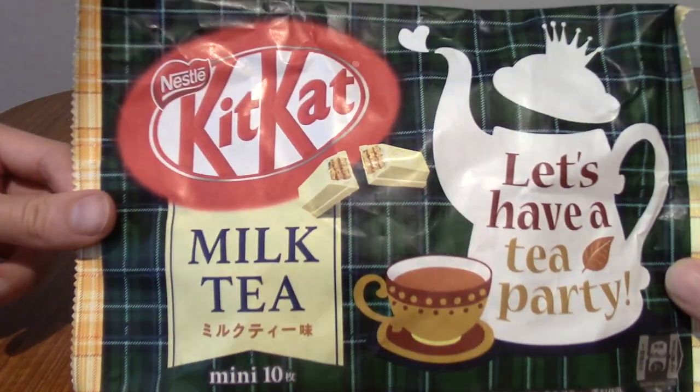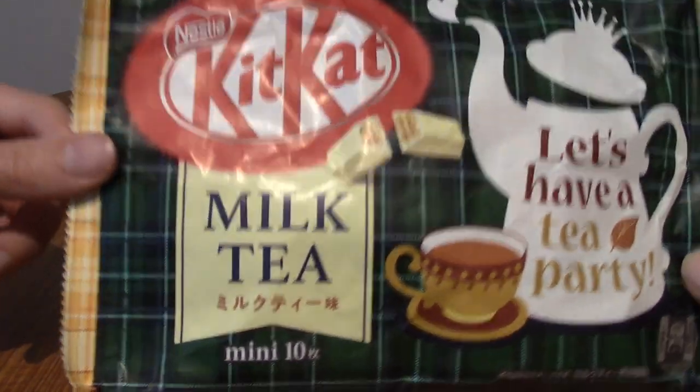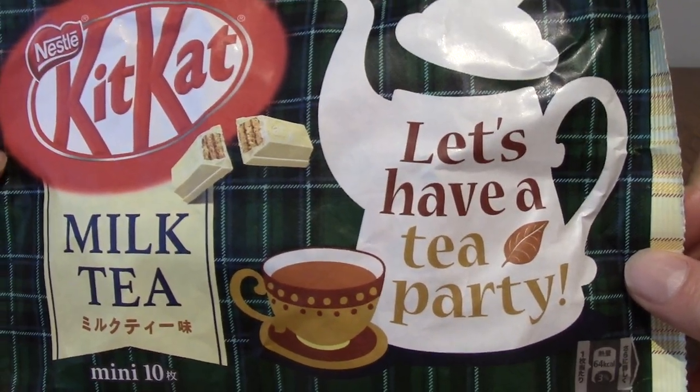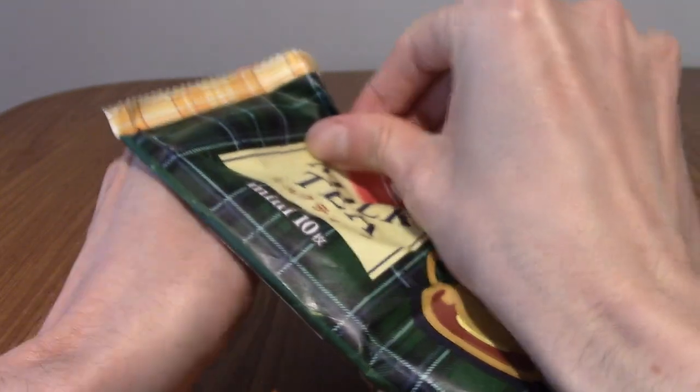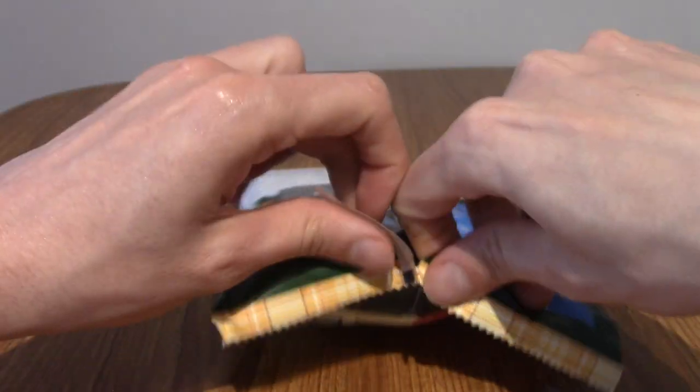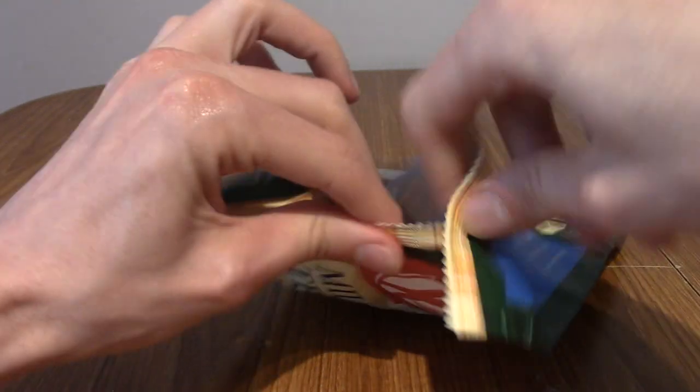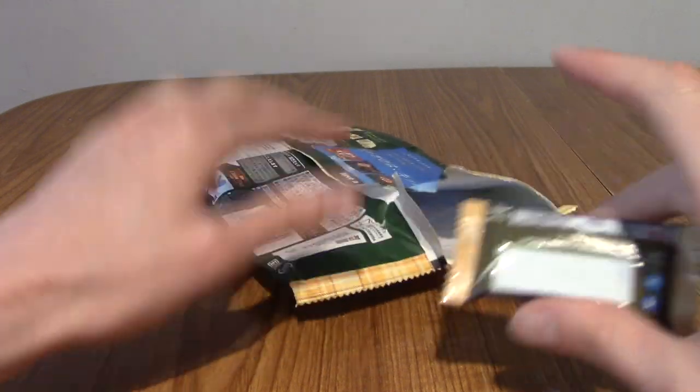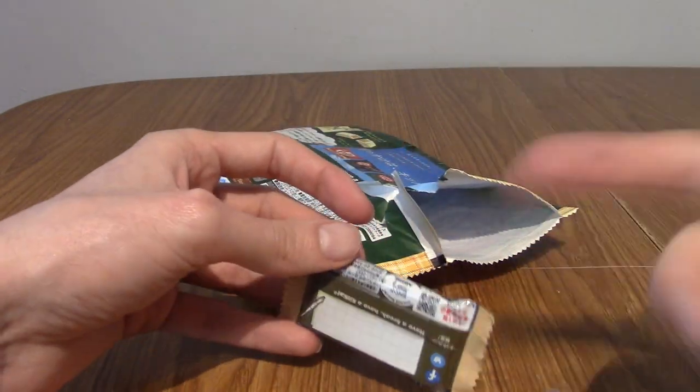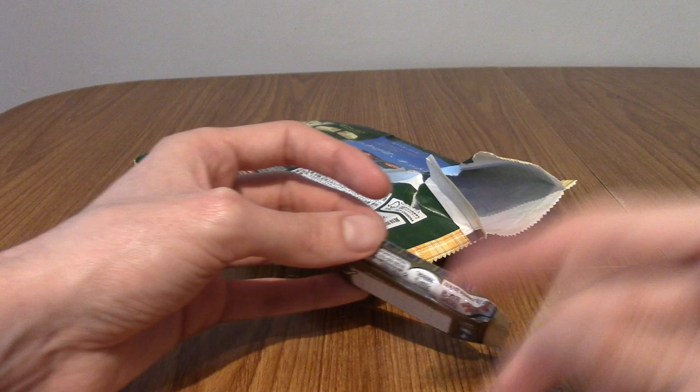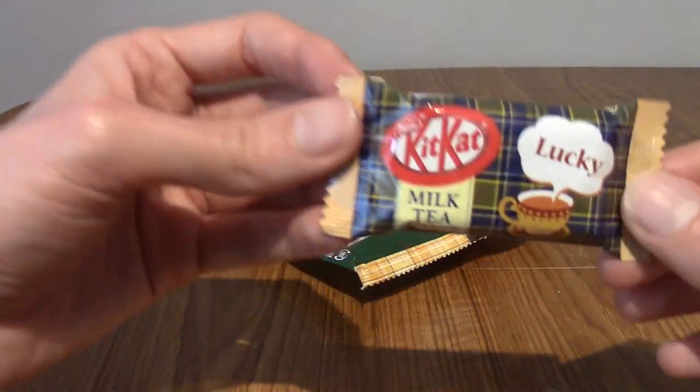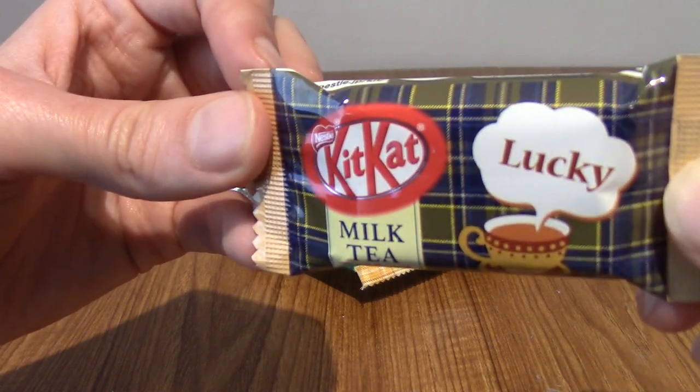It is time again for some Kit Kat. This time, it's milk tea flavor. Let's have a tea party. So if you remember last episode, or the episode before, we did have the coffee break flavor. Some of the comments did point out actually, might not have necessarily been a coffee flavored Kit Kat, but a Kit Kat to go with coffee, I guess. Either way, they didn't taste of coffee at all. But this one, I've got some more hopes for.